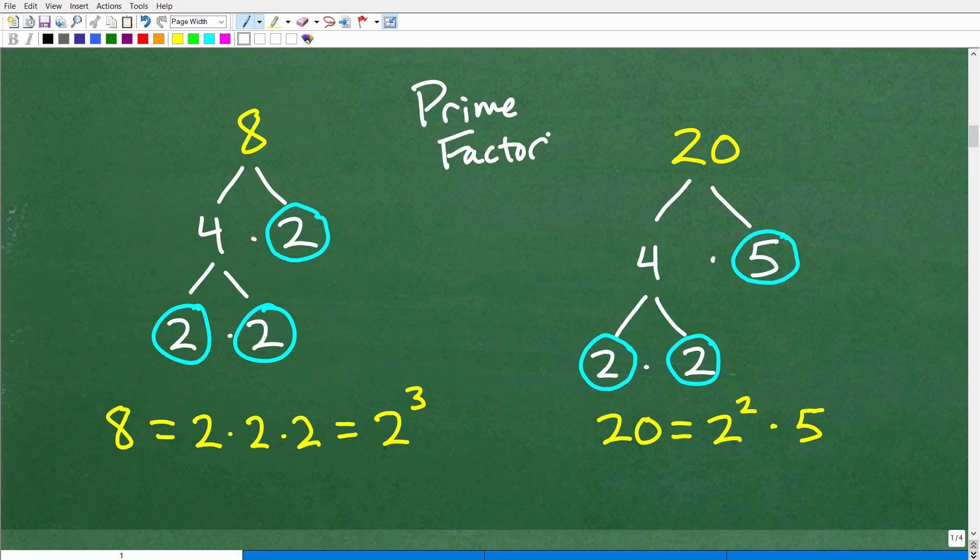So let's get into it. Here's 8 and 20. What you need to do is you need to prime factor each number using a factor tree. Most of you've seen a factor tree. So here's how it goes. Let's start with 8. 8 is the same thing as 4 times 2.